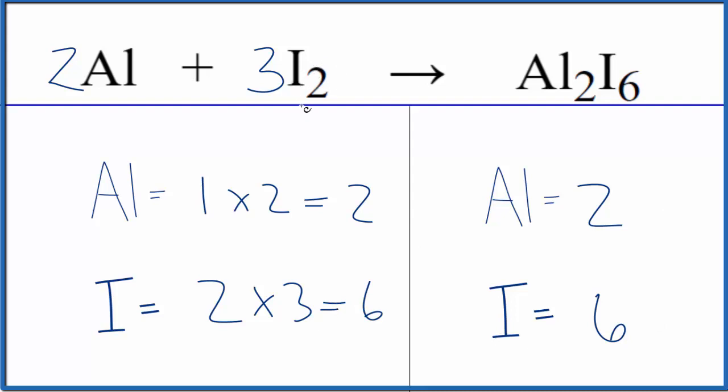If we were to write the states, they would look like this here. We have a solid for the aluminum, iodine. That's probably going to be a gas in this case. And this Al2I6, that is also a solid. So this is the balanced equation when we would have aluminum and iodine gas combining to form this solid here, this Al2I6.